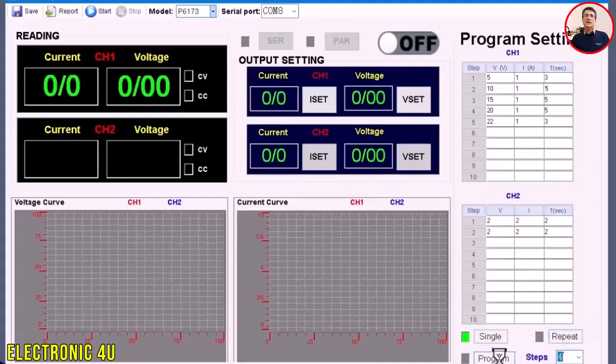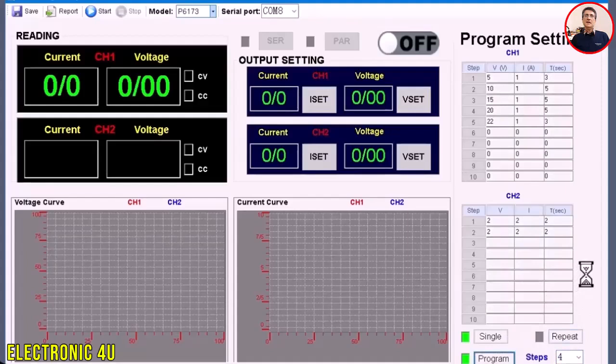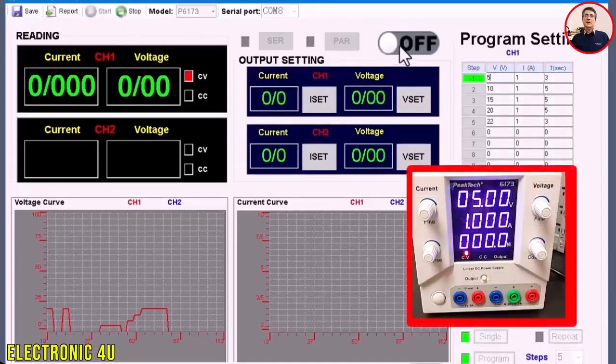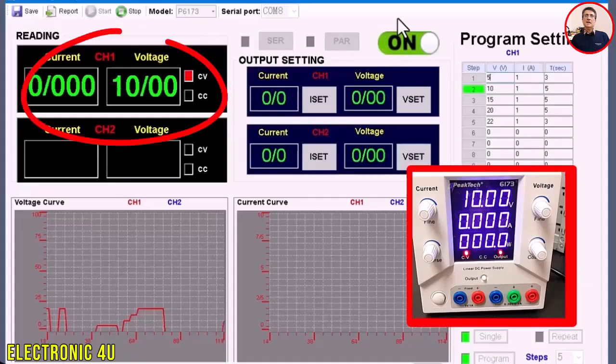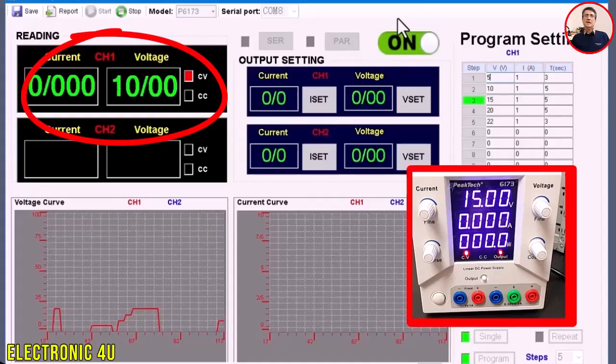Now, to run the settings and show the output, first click the Program button. Then click the Start button, and then click Off. The device creates the output according to table CH1 with the set voltage and current at exact timing. Changes are also displayed live in the software.